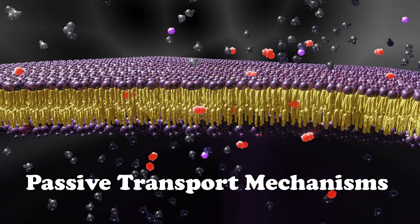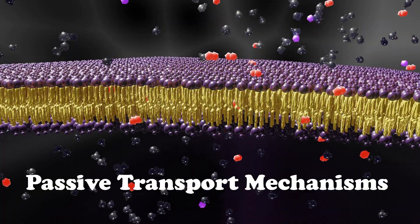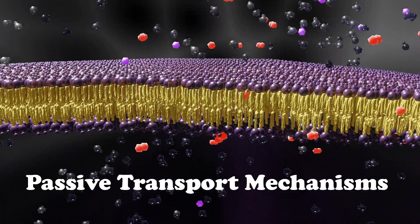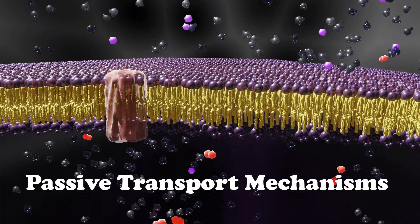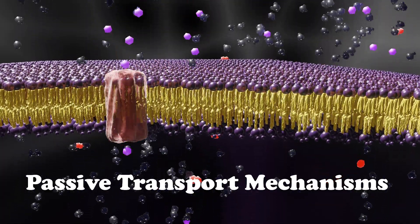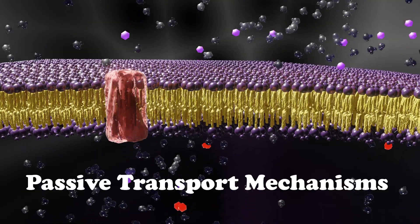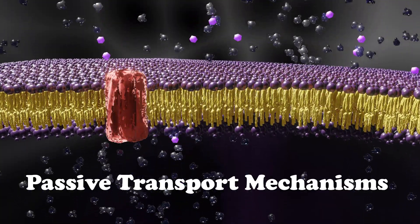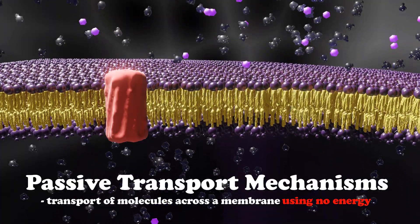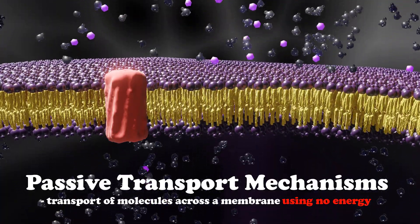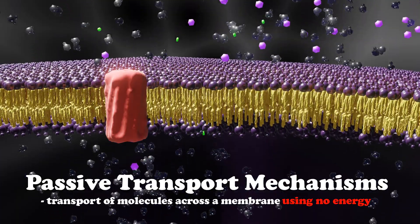Welcome to Animated Science Biology. Today, we are looking at passive transport mechanisms of the plasma membrane. Previously, we took a look at the plasma membrane structure, so if you have not seen that, please check that out. Passive transport mechanisms are the transport of molecules across the plasma membrane using no energy. That's a key distinction from active transport mechanisms, which use energy — and we'll cover that in the next video.